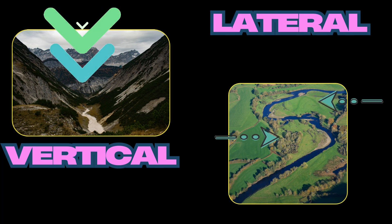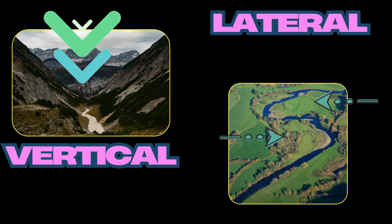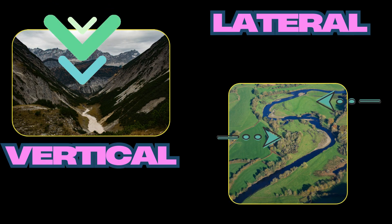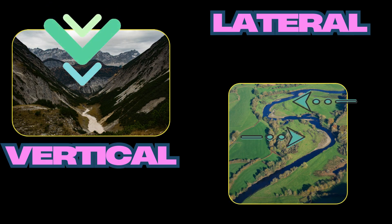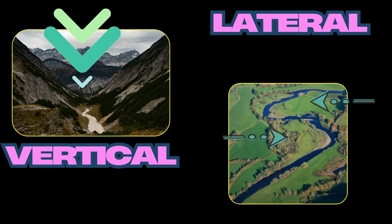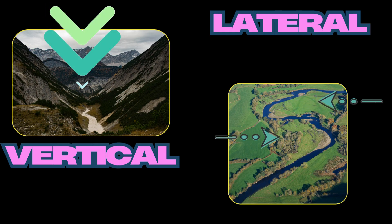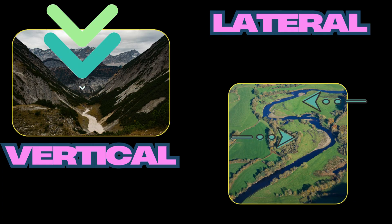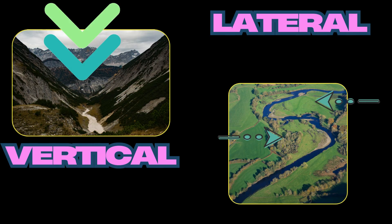In this geography snippet short, I'm going to briefly go over how vertical and lateral erosion change within a river's course. Erosion on a river can be either vertical or lateral, or sometimes both at the same time.